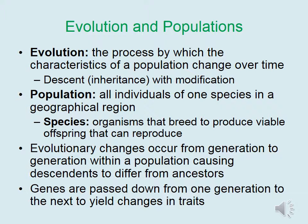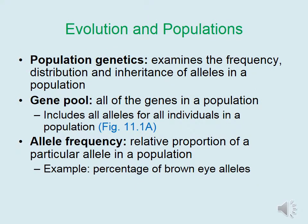Evolutionary changes occur from generation to generation within a population, causing descendants to differ slightly from ancestors. It's these genes passed down from one generation to the next that yield changes in traits. Population genetics examines the frequency, distribution, and inheritance of alleles in a population. Frequency refers to how often an allele is present, distribution refers to which individuals have the alleles, and inheritance refers to how often alleles are passed down to offspring.